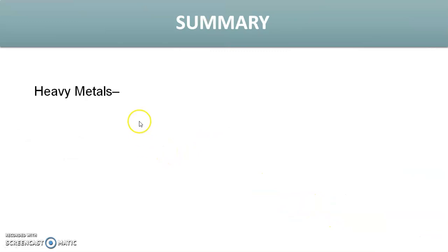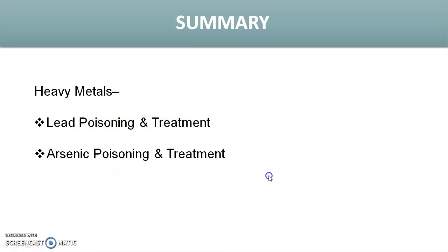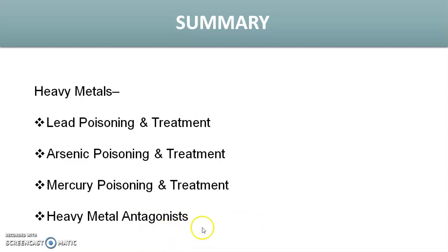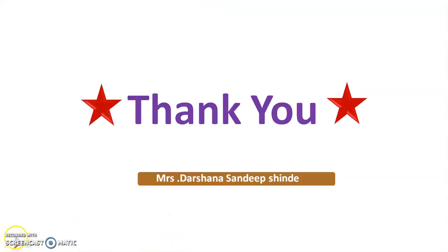In summary, today we covered what is meant by heavy metals — arsenic, lead, and mercury — their poisoning and treatment. We covered lead poisoning and its treatment, arsenic poisoning and its treatment, mercury poisoning and its treatment, and heavy metal antagonists. Among the heavy metal antagonists, we covered dimercaprol (BAL, British Anti-Lewisite) and EDTA. Thank you very much for attending this session.